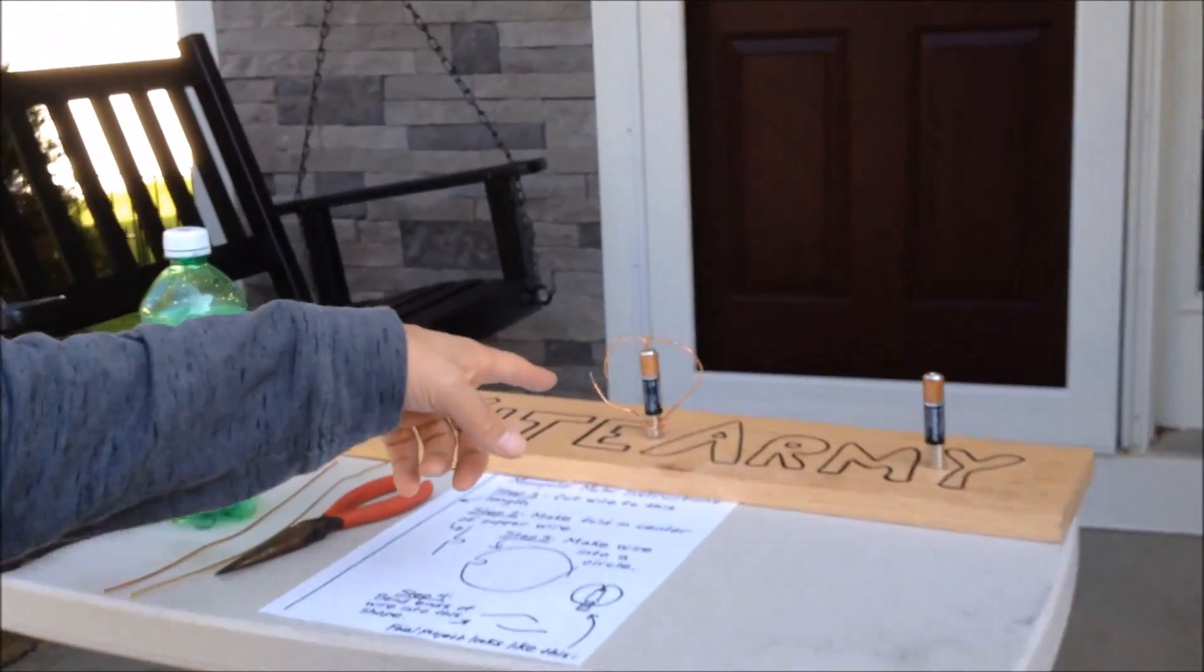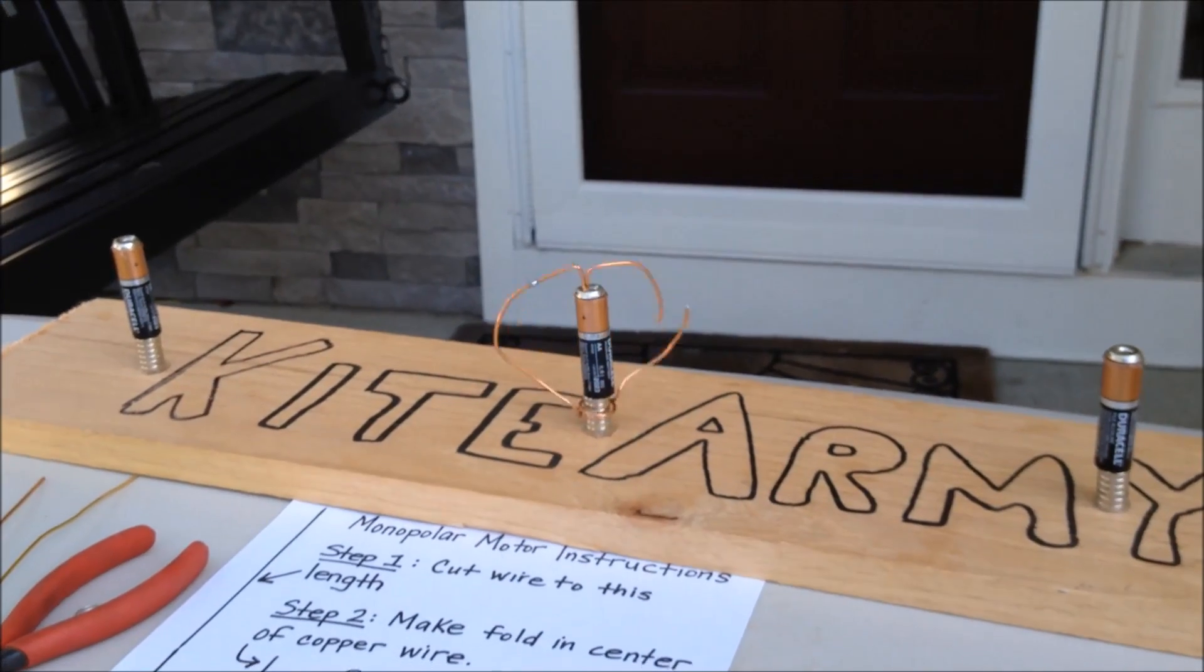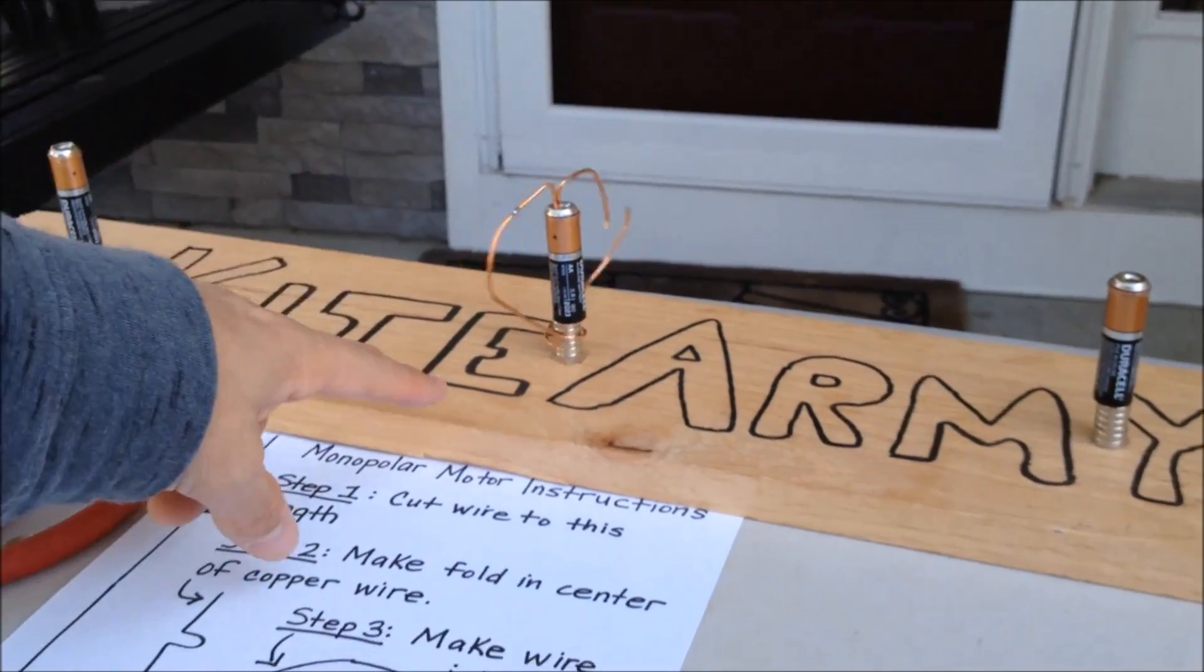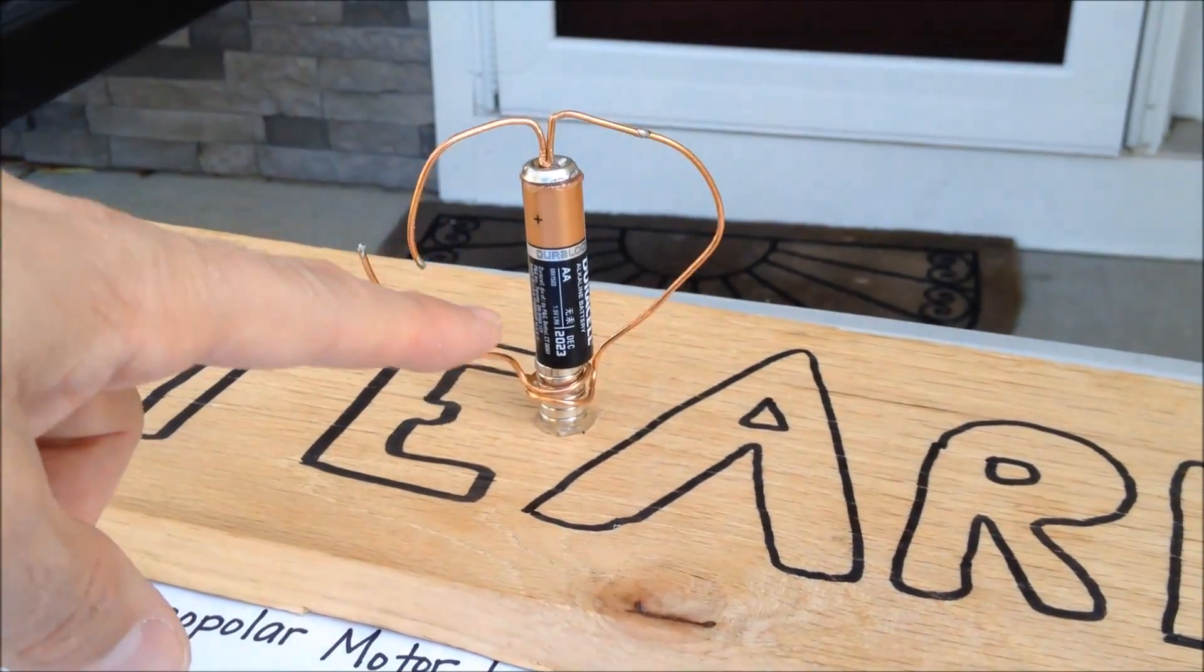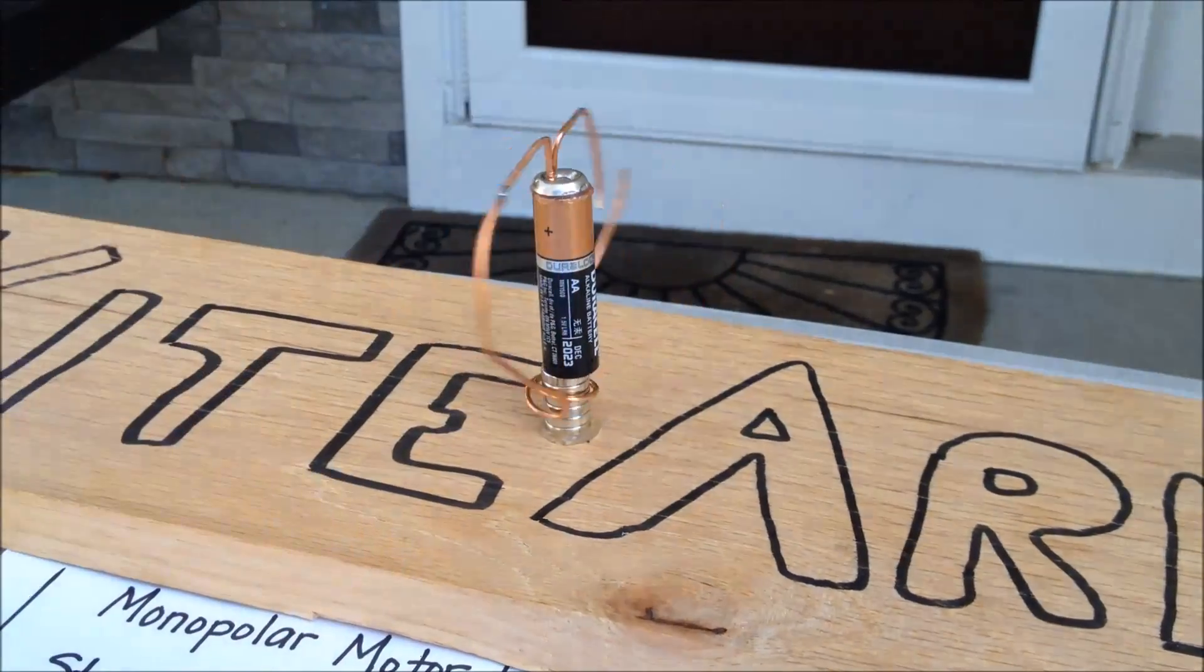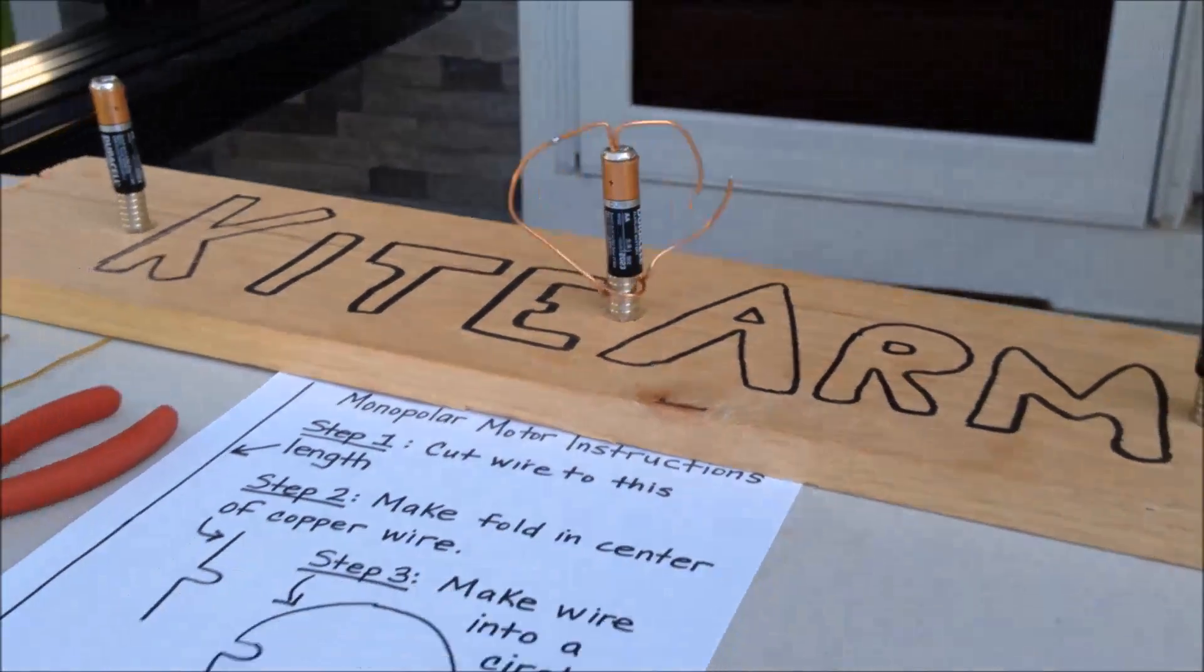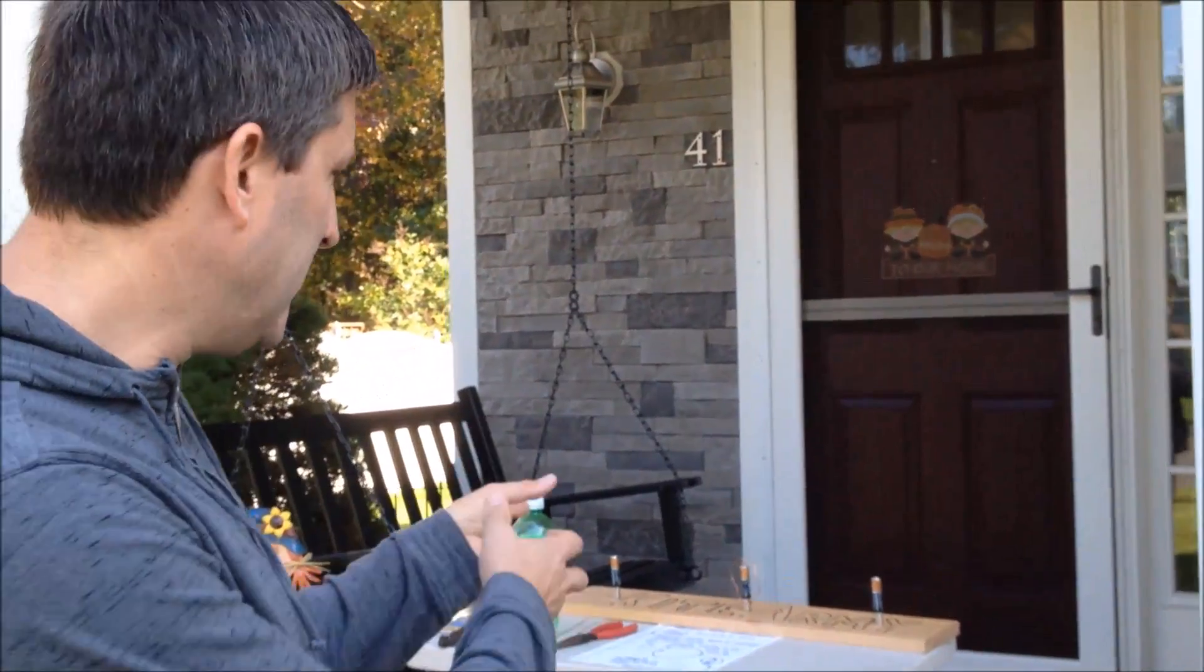So you can see here this is a monopolar motor. It's probably one of the most simple motors you can build. Basically the parts are magnets, super strong magnets, a AA battery, a washer on top and some copper coil running around. The forces between the magnet and the coil result in that motor type movement.